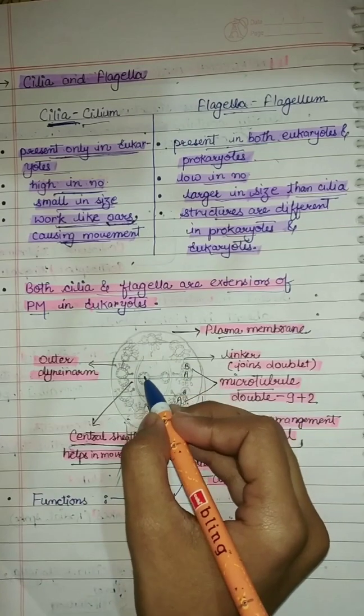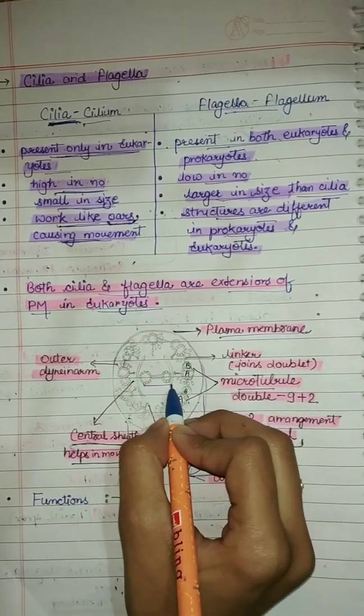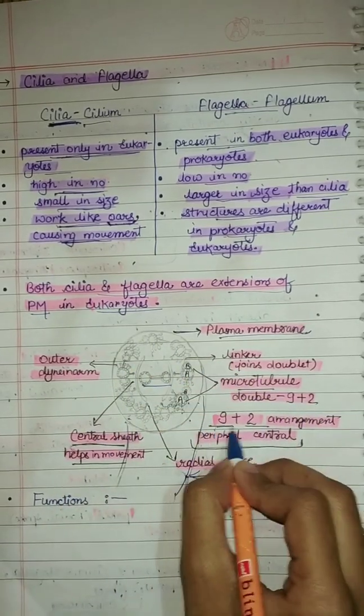There are 9 pairs of doublet radially arranged peripheral microtubules and a pair of centrally located microtubules. This arrangement of axonemal microtubules is referred to as 9 plus 2 arrangement.